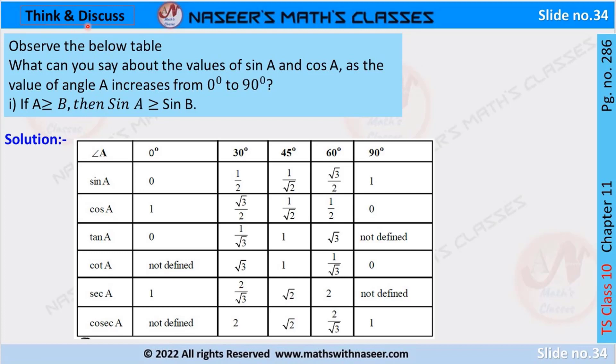Now we are going to solve Think and Discuss, page number 286, chapter 11, trigonometry. Observe the given table. What can you say about the values of sin A and cos A as the values of angle A increases from 0 to 90 degrees?